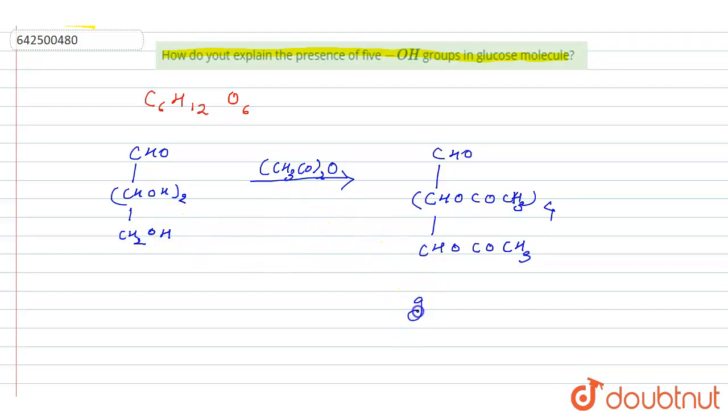It will give glucose pentaacetate. So this shows that there are 5 OH groups in the glucose molecule. This is the answer for this question.